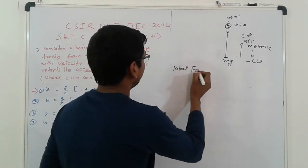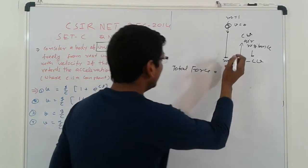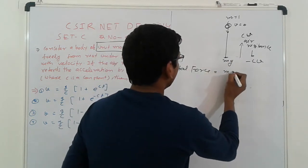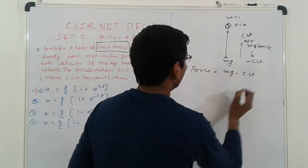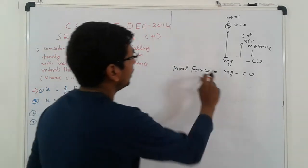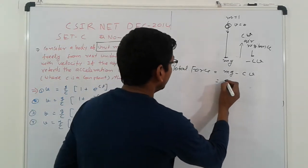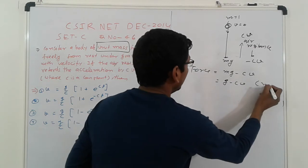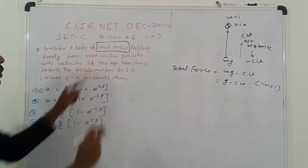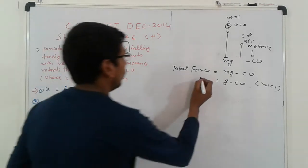So total force, here, that is Mg minus CV. But Mg minus CV, M is 1. It means here, g minus CV. Because M is equal, this is already E by line, that is a unit mass. That is F.